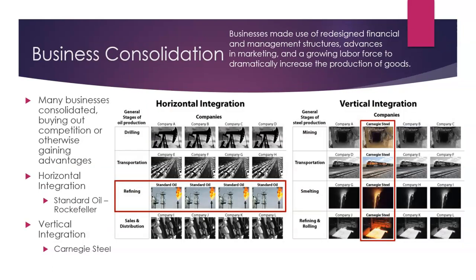Specific forms of business consolidation were developed that helped create some of the large monopolies of the era. John D. Rockefeller, the owner of Standard Oil, practiced what came to be called horizontal integration, whereby he bought out all the other competitors in the oil refining industry, thus eliminating his competition. By the late 1880s, Standard Oil controlled almost 90% of the oil refining industry. Essentially, he formed a monopoly and could increase prices, and therefore his profits, without needing to improve the actual product.